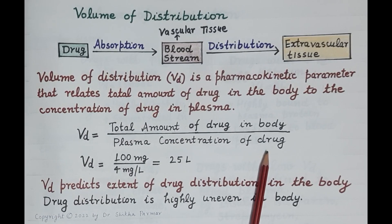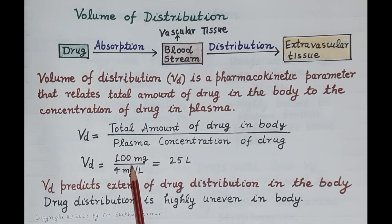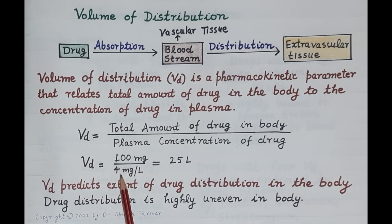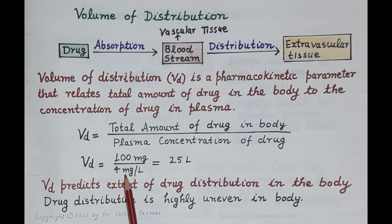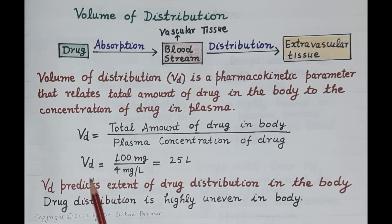Let's understand this with an example. Say 100 milligrams of a drug is administered by the intravenous route — that is, injected directly into the bloodstream. Total amount of drug in the body is 100 mg. After some time, when the drug has been distributed and equilibrium has been attained, a blood sample is withdrawn and plasma concentration is determined — say 4 milligrams per liter. Volume of distribution is 100 mg ÷ 4 mg/L = 25 liters.